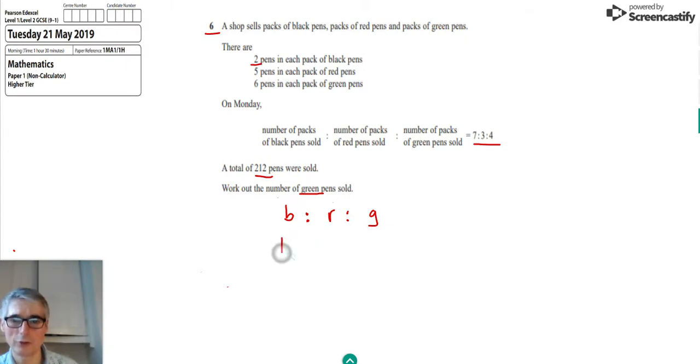And then if we take the five and the three, we can multiply them together because we've got three packs each containing five pens, so that would be three times five, which is 15. And then we've got four packs of green pens, but each one of those contains six pens, so that gives us four times six, which is 24. So that's the ratio not just of the packs sold, but actually the ratio of the black pens to the red pens to the green pens that are sold.